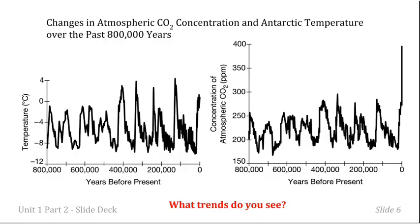Here's a graph showing changes in atmospheric CO2 concentration and Antarctic temperature over the past 800,000 years — temperature on the left, concentration on the right. I'd like you to push pause and jot down a couple of thoughts answering the question: What trends do you see? Some things you could have said: the concentration of CO2 is spiking up to at least 400 parts per million, more than ever before recently, and the swing in temperature seems to range about 12 degrees Celsius between the two extremes.